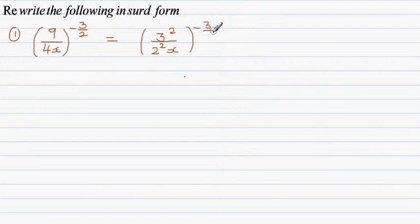The first rule that we are applying: when you have an index in brackets with an index outside, multiply the indices. So this is 3 to the power 2 times 3 halves divided by...